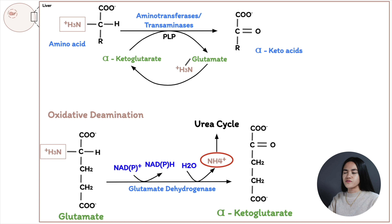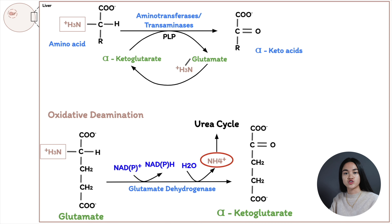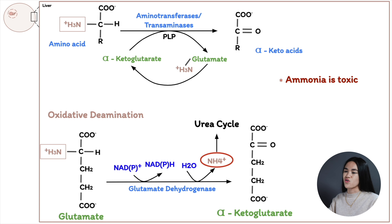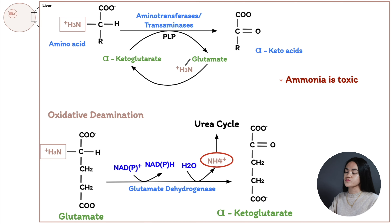Before we go through how muscles and other tissues transport ammonia, let's answer why we actually need to remove it. Ammonia is toxic — if the brain is damaged due to ammonia toxicity, it can cause cognitive impairment, epileptic seizures, or in severe cases it can cause the brain to swell, leading to death. So we need to transport free ammonia from extra-hepatic tissues to the liver or kidneys.